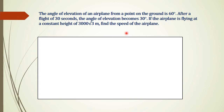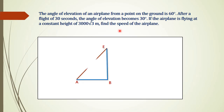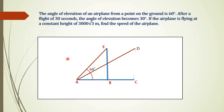First, we have to draw the diagram for this problem. Take the initial point of the airplane as A — this is where the airplane starts. It is given that the angle of elevation of the airplane from a point on the ground is 60 degrees. We define that point as E, with BE as its height, and the angle of elevation from A to E is 60 degrees. After 30 seconds, the plane will be at position D, and the angle of elevation from A to D is 30 degrees.